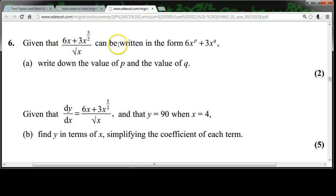Given that this expression here can be written in the form of 6x to the p plus 3x to the q, write down the value of p and the value of q. Given that dy/dx equals this expression and that y equals 90 when x equals 4, find y in terms of x, simplifying the coefficient of each term.